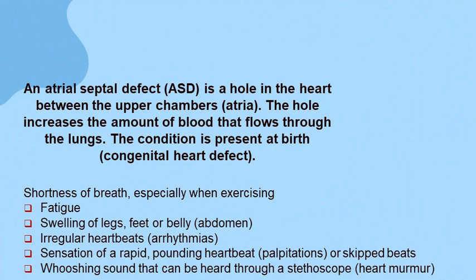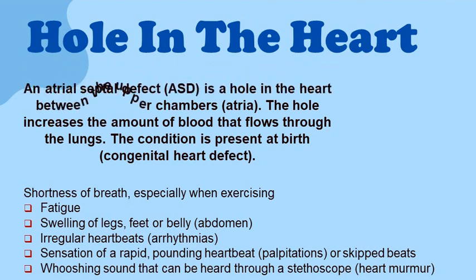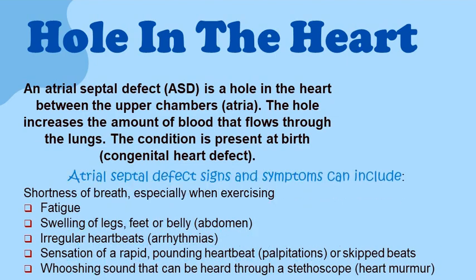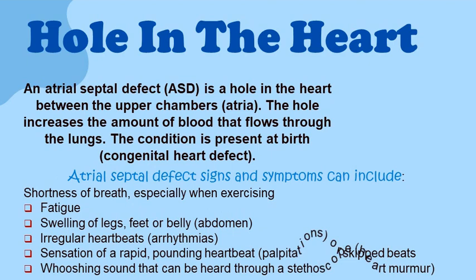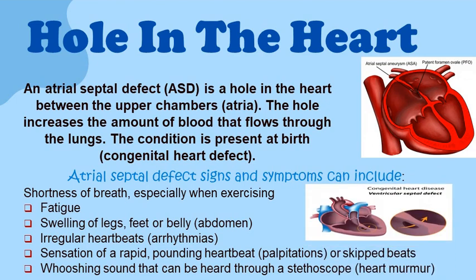An atrial septal defect is a hole in the heart between the upper chambers, the atria. The hole increases the amount of blood that flows through the lungs, and the condition is present at birth as a congenital heart defect. Atrial septal defect signs and symptoms can include shortness of breath, especially when exercising, fatigue, swelling of the legs, feet, or abdomen, irregular heartbeats, palpitations or sensation of a rapid pounding heartbeat, and a swooshing sound that can be heard through a stethoscope — a heart murmur.